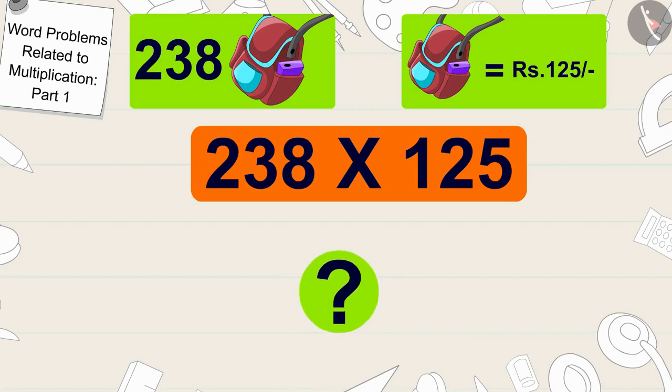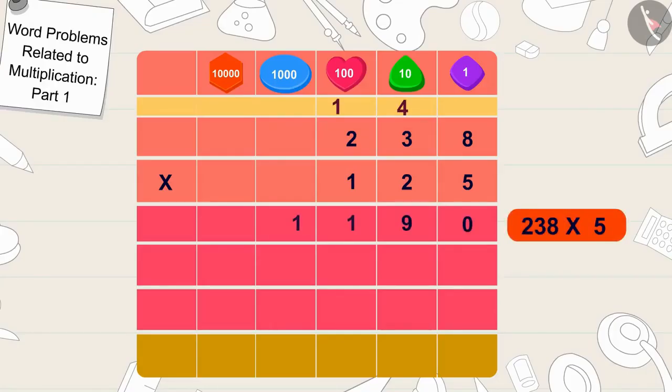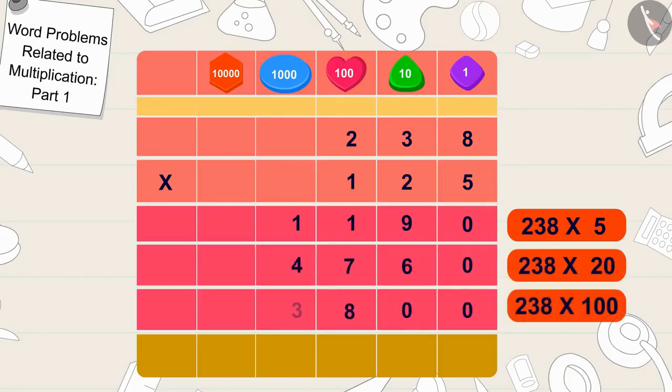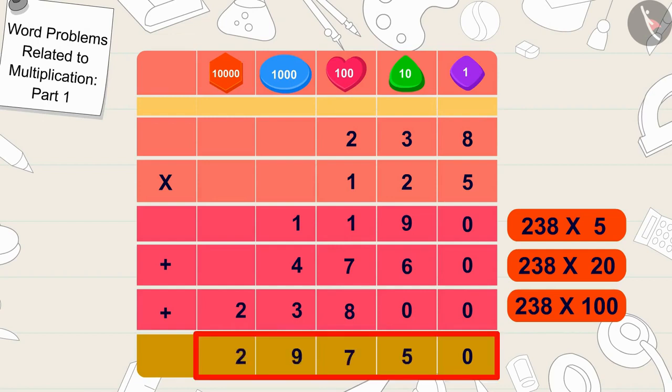Children, can you find the answer to this multiplication? If you want, you can stop the video and find the answer. In this way we can find the answer: 238 times 125 is 29,750.